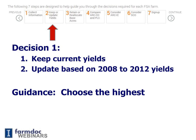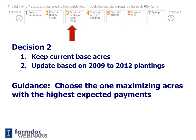Step two is decision one: should you keep current yields or update based on 2008 to 2012 yields? The guidance here is to choose the option that results in the highest yield. Step three deals with decision two: whether to keep current base acres or update based on 2009 to 2012 plantings. Our guidance here is to choose the option that maximizes the acres with the highest expected payments, and we will go through that in detail in step three.